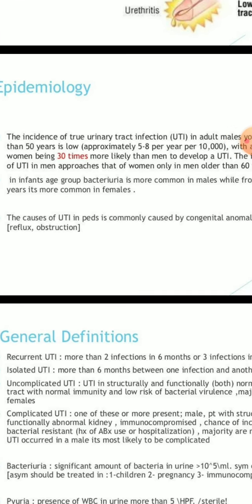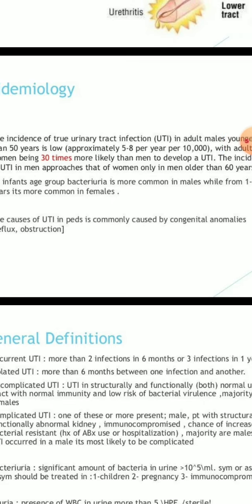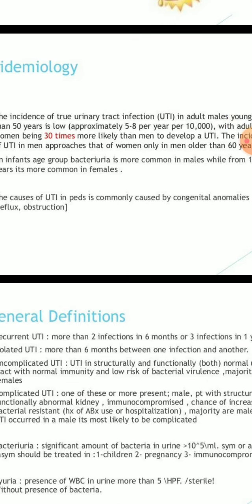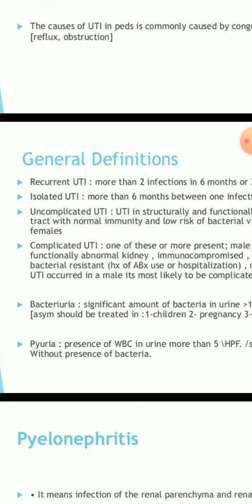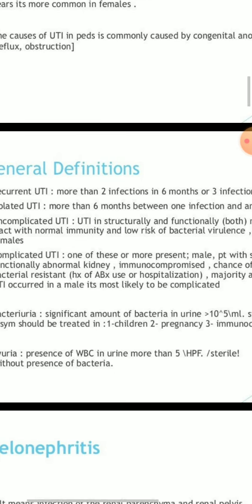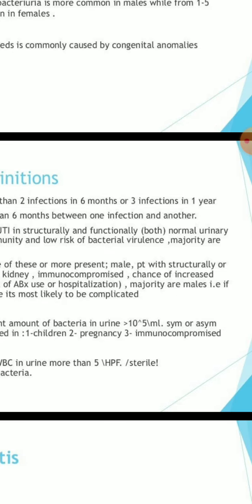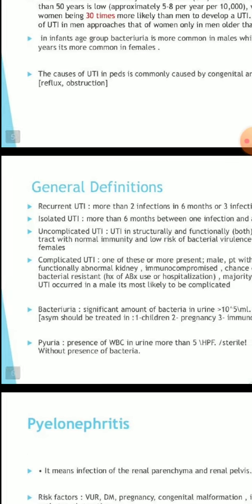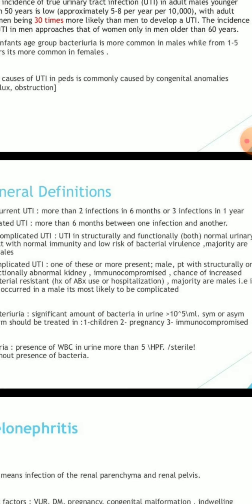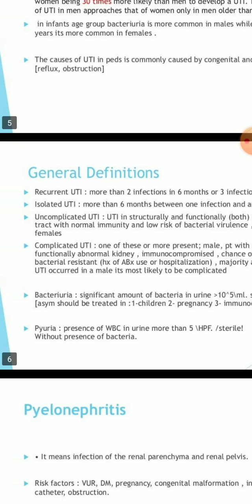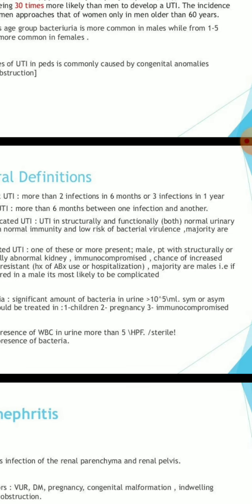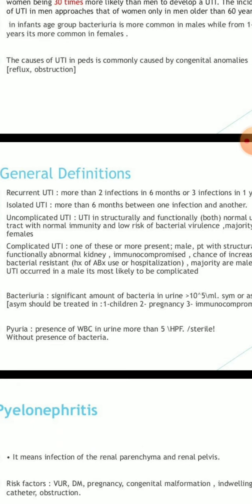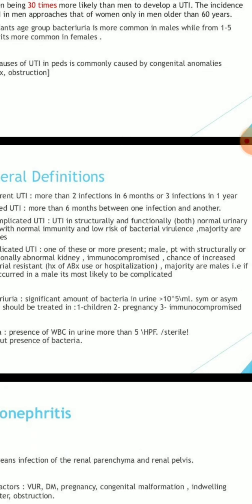The cause of UTI in pediatric patients is commonly congenital anomalies, reflux, and obstruction. General definitions: Recurrent UTI means more than 2 infections in 6 months or 3 infections in 1 year. Isolated UTI means more than 6 months between one infection and another. Uncomplicated UTI occurs in a structurally and functionally normal urinary tract with normal immunity, low risk of bacterial virulence, and majority are females.